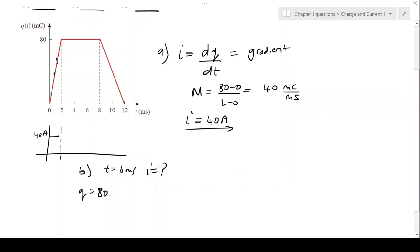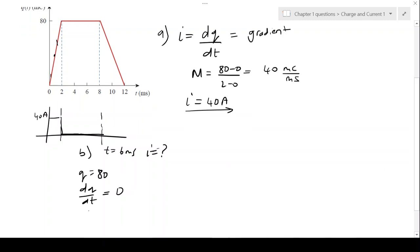What would the derivative of that be? What is dQ/dt? The derivative of a constant is always zero. So that graph will remain flat from 2 to 8 milliseconds. The current i equals 0 amps.